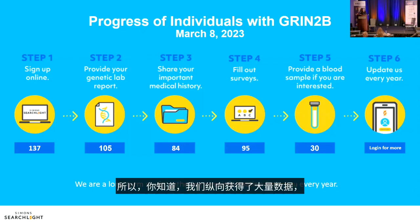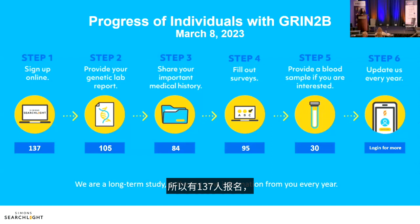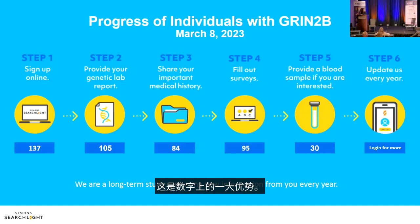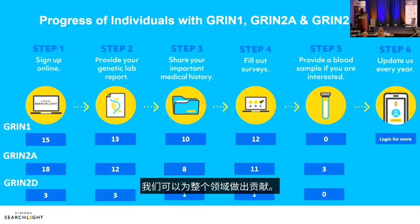GRIN2B enrollment numbers: 137 signed up, 105 confirmed genetic reports, 84 shared standardized medical histories, 95 completed surveys, and 30 provided biosamples. These numbers have grown substantially from early double-digit figures. The goal is to combine this with other registries to avoid duplication and maximize the field's knowledge base.